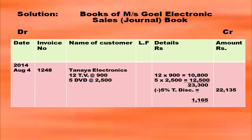Name of the customer is Tanya Electronics. 12 TVs at Rs. 900 each: 12 × 900 = 10,800. 5 DVDs at Rs. 2,500 each: 5 × 2,500 = 12,500. Total: 10,800 + 12,500 = 23,300. Trade discount of 5%: 23,300 × 5/100 = 1,165. Net amount: 23,300 − 1,165 = 22,135 in the amount column.